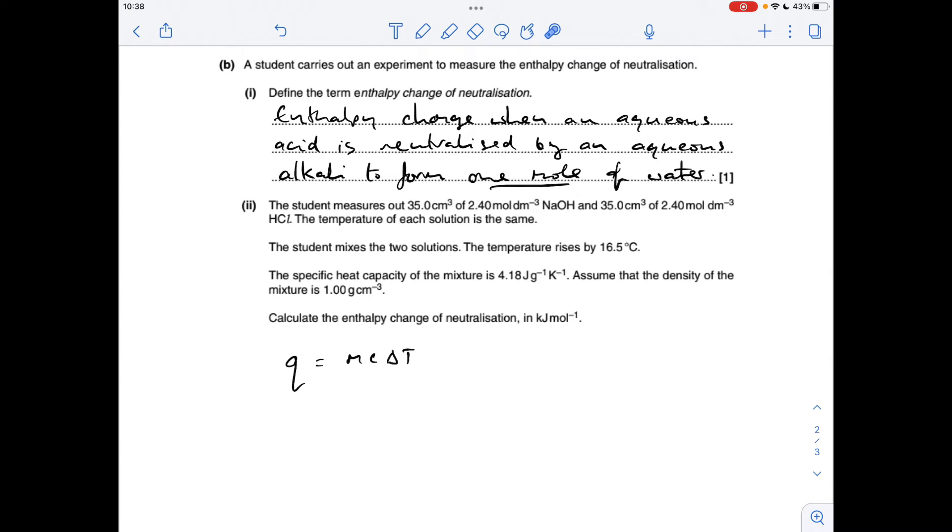Well, it's the mass of the solution, so we've got 35 cm³ being added to 35 cm³, and so therefore the mass will be 70. The C value, the specific heat capacity we're told is 4.18. I forgot to mention when I was talking about mass that we have to assume the density of the mixture is 1 gram per cubic centimetre, just like water. So whatever the volume is, you've got that in grams.